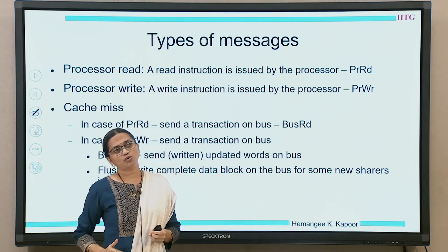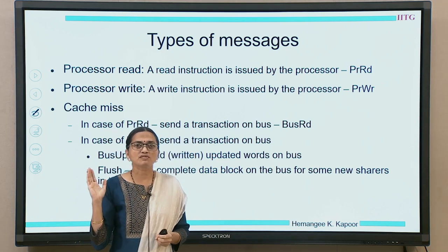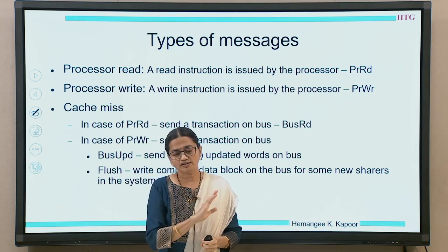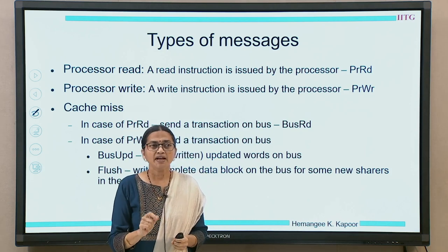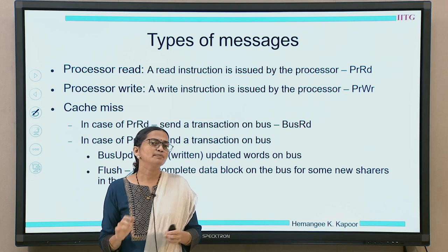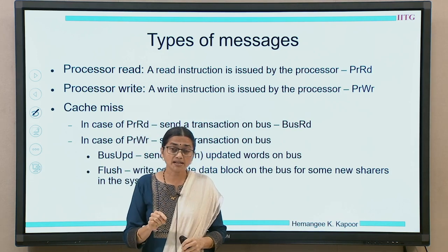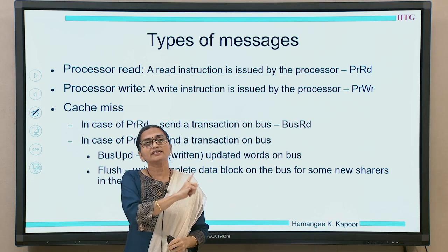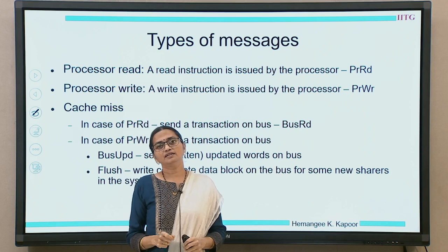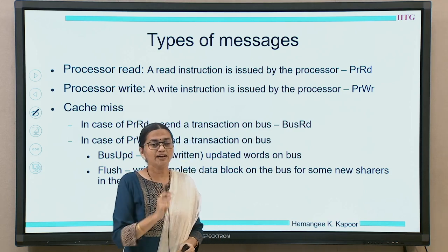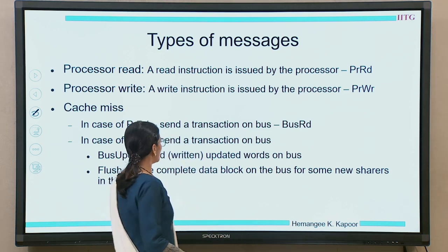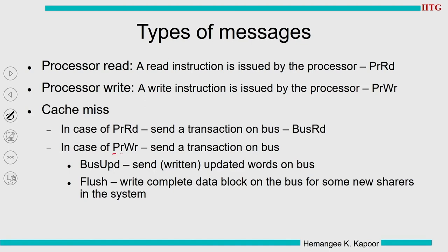In invalidation-based protocols, on a write we had to invalidate the copies of other caches, but in this update-based protocol we do not invalidate others — instead all the other copies should get the corrected item. So we have to update all the other copies. On a processor write, instead of invalidating others, we do not send a bus read X.